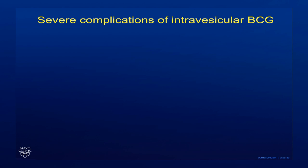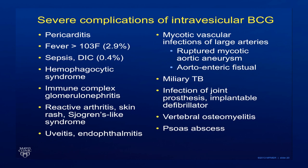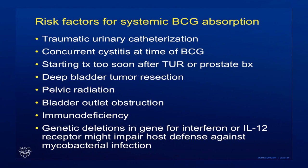Severe complications of intravesicular BCG can include pericarditis, high fevers, sepsis, immune complex glomerulonephritis, some skin changes, and of course uveitis or endophthalmitis. In addition, these organisms can cause infections of the large arteries, which can lead to aneurysms and ruptures. It can cause miliary TB and infection of any implanted prostheses or defibrillators. Risk factors associated with systemic BCG spread include traumatic urinary catheterization if the bladder was inflamed at the time of BCG installation, starting treatment too soon after transurethral resection of the tumor or prostate biopsy, bladder outlet obstruction, immunodeficiency, and some genetic deletions.